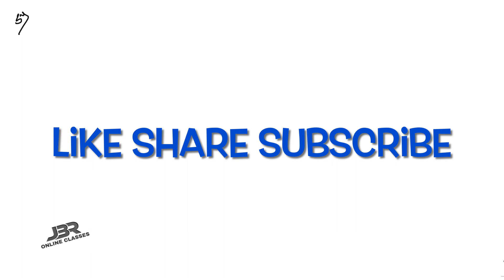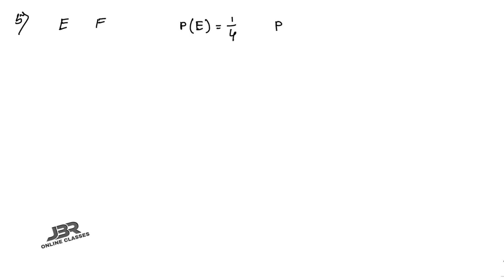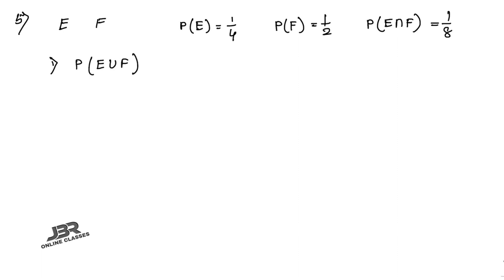Last problem: E and F are events with P(E) = 1/4, P(F) = 1/2, and P(E∩F) = 1/8. Find P(E∪F): using the formula P(E) + P(F) − P(E∩F) = 1/4 + 1/2 − 1/8 = 5/8.